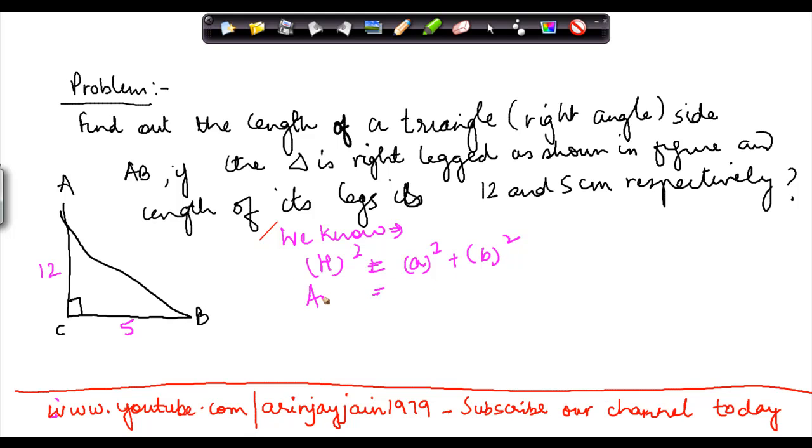Now what is the hypotenuse here? AB square is equal to 12 square plus 5 square. 12 square is 144, 5 square is 25, which equals 169. So AB square equals 169, therefore AB equals square root of 169. We know that 169 is 13 squared, so the square gets cancelled and AB equals 13 cm.